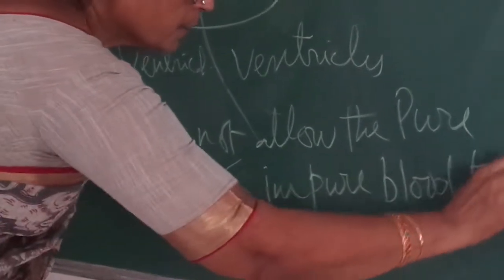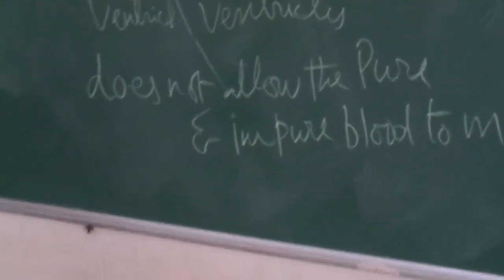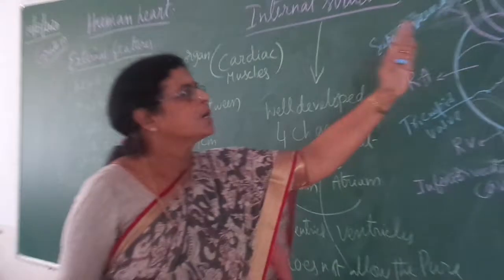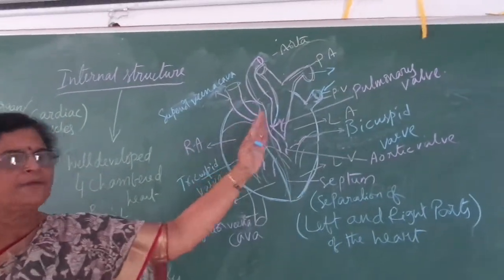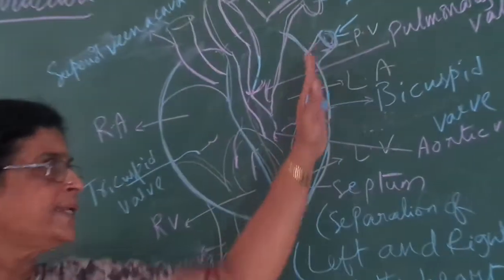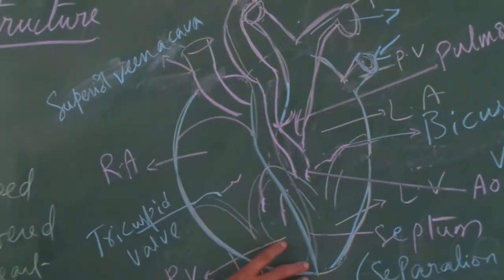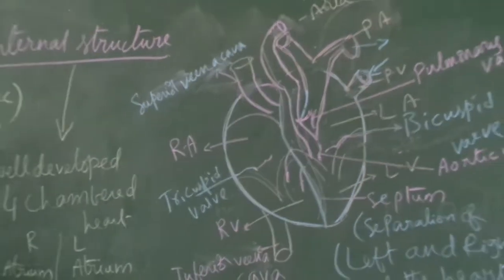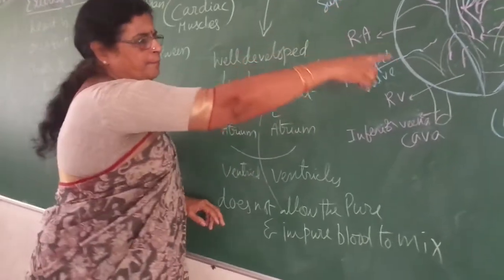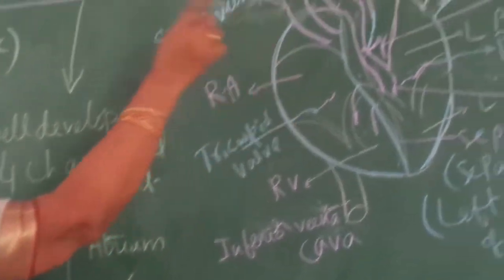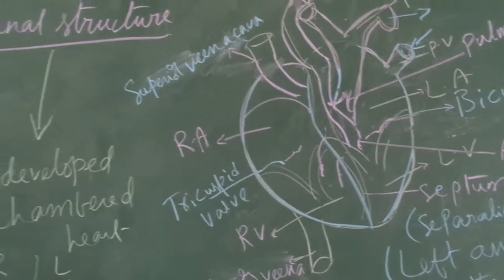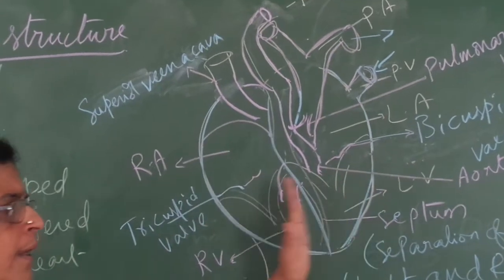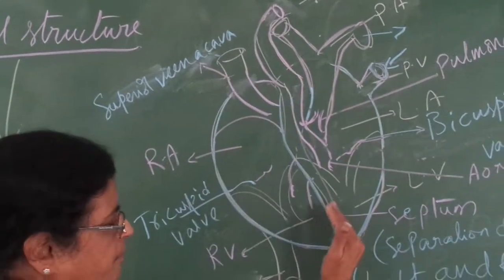In lower organisms like fishes and amphibians, mixed blood is distributed. But in humans, the left side contains only oxygenated blood and the right side contains only deoxygenated blood. These two types of blood are not allowed to mix in the human heart because of the muscular septum. We need higher energy levels compared to lower organisms. The four chambers are: left atrium, right atrium, left ventricle, right ventricle, and the septum.